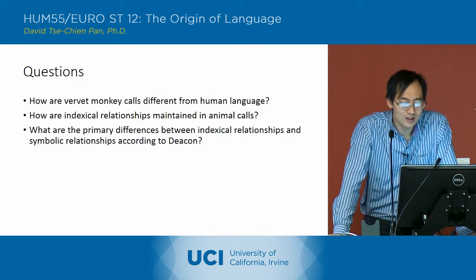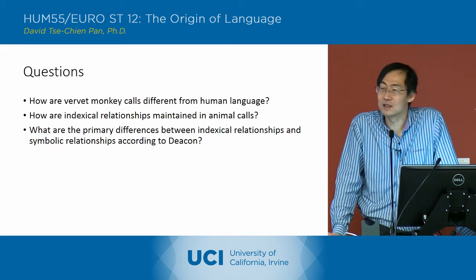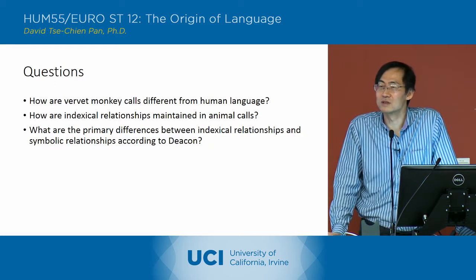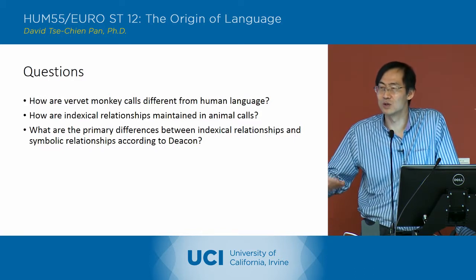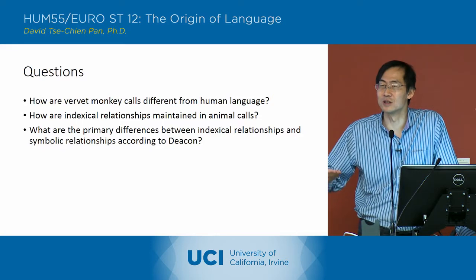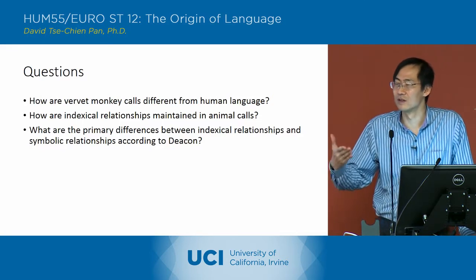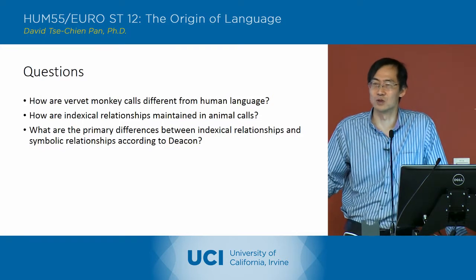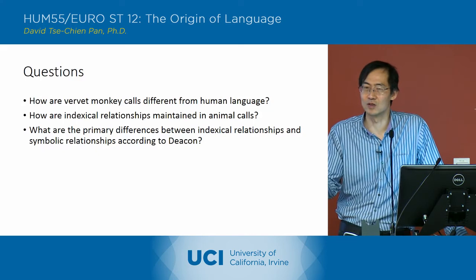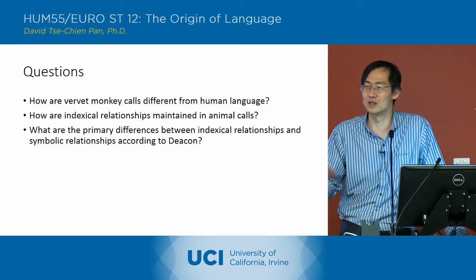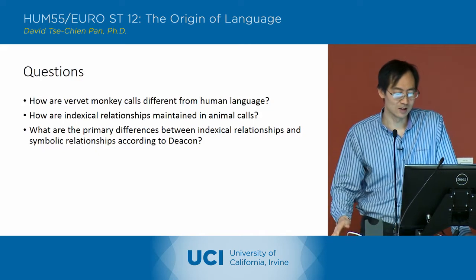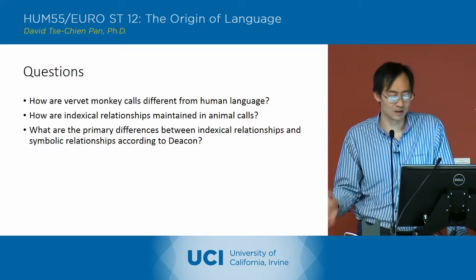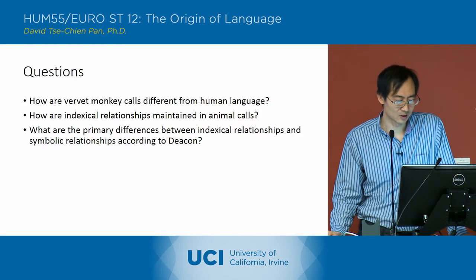So how are indexical relationships maintained in animal calls? They're maintained by that continual repetition of the object to which it refers. That continual repetition of that relationship between sign and object is necessary to maintain the indexical relationship.